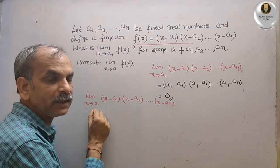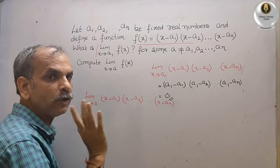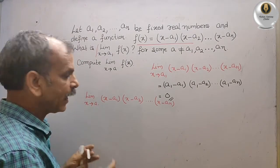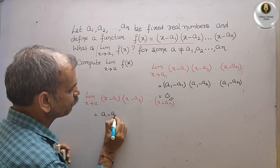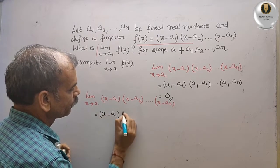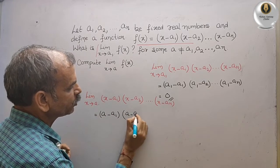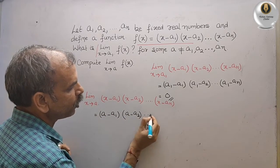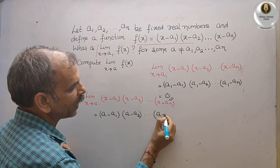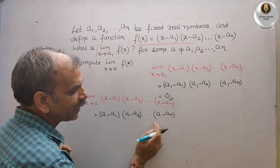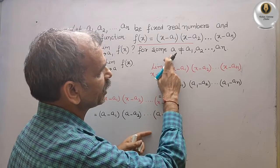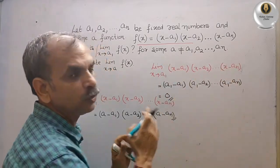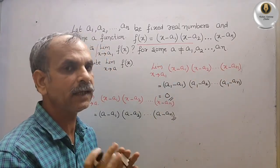So for that, you will get your answer as (a minus a1)(a minus a2) so on up to (a minus an). Then, as your answer is this, why? It means they have given the condition: a is not equal to a1, a2, a3, anything.